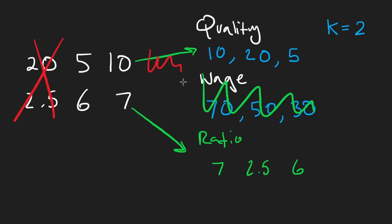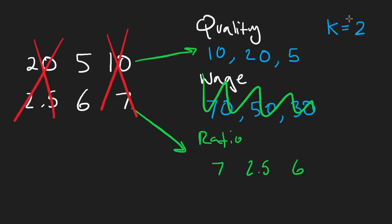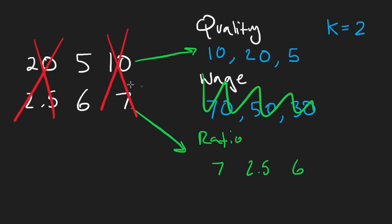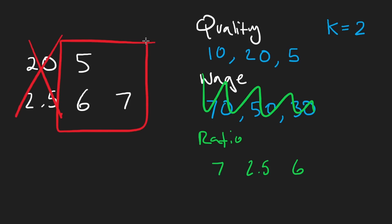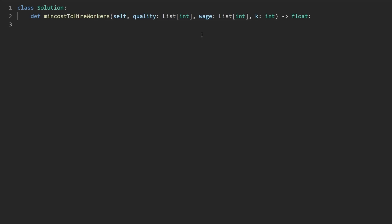Imagine we have more numbers: we're going to continue to pop values and push them, making sure our heap is always of size K, and then returning whatever minimum wage we could get. So what we do is start off greedy, but then we know we're going to have to remove some and add some, doing so in an intelligent way.